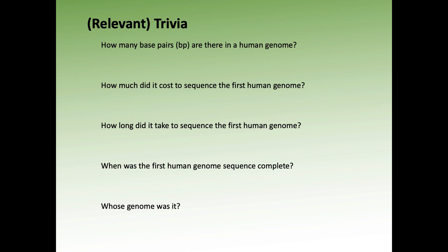Here are the answers. The human genome is about three billion bases long — the haploid copy is about 3.2 billion bases. It cost almost three billion dollars to sequence, quite an endeavor.